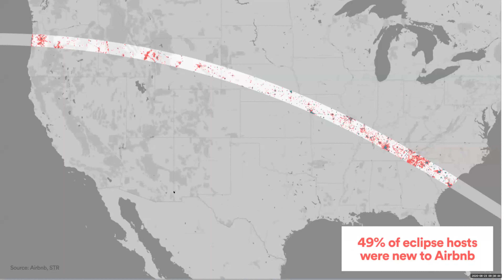An example of that elastic supply is the eclipse. I started at Airbnb one or two weeks before this happened. When the eclipse happened in 2017 and cut across the country, many people stayed in Airbnbs — many more than in hotel rooms. Interestingly, half of the hosts who hosted during the eclipse were hosting for the first time. So there was truly an elastic response to the eclipse.